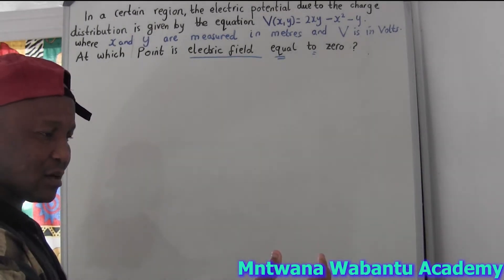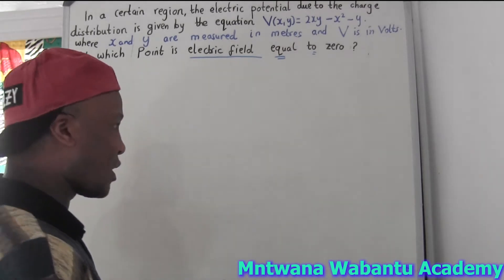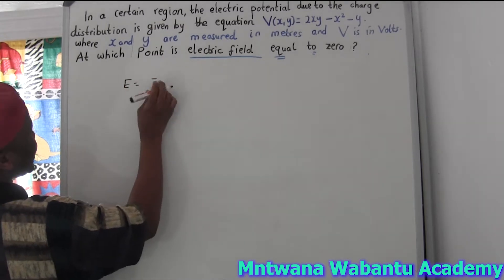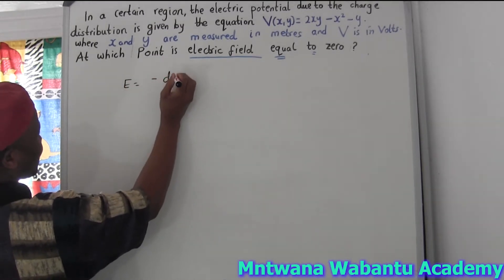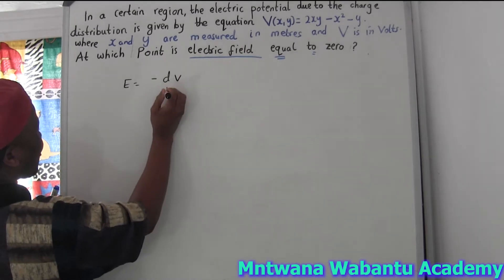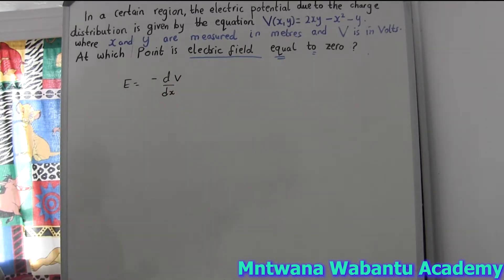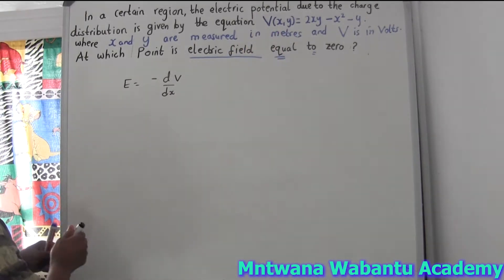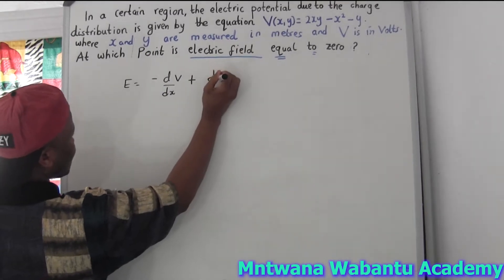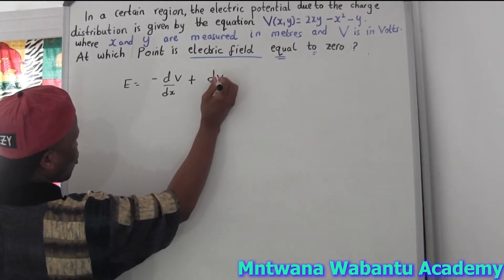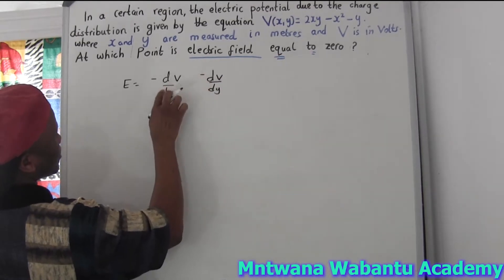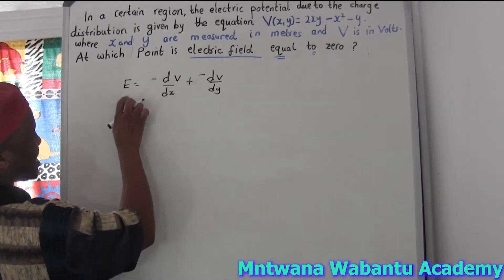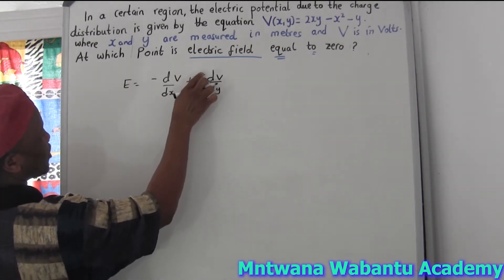First I need to find the electric field and then set it equal to zero. I have a potential difference V, so to get the electric field I must differentiate V. Normally we say E = -dV/dx, but this time it's not only x — there's x and y. So for this case we say E = -(dV/dx î + dV/dy ĵ).